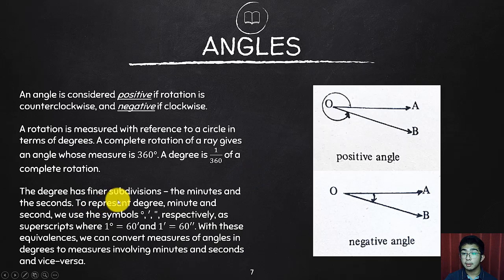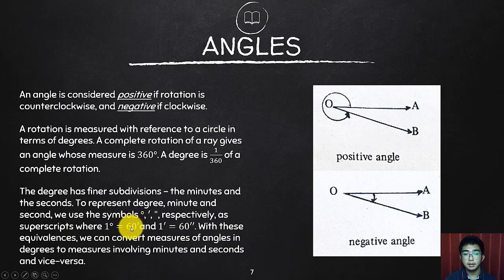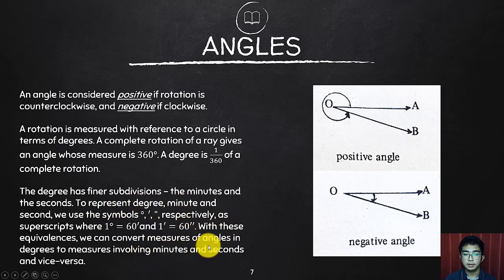This is called the hexagesimal system when it uses degrees, minutes, and seconds — used exclusively for angles. One degree is equal to 60 minutes and one minute is equal to 60 seconds, following the notation of time but using degrees instead of hours. With these equivalences, we can convert measures of angles in degrees to measures involving minutes and seconds, and vice versa.